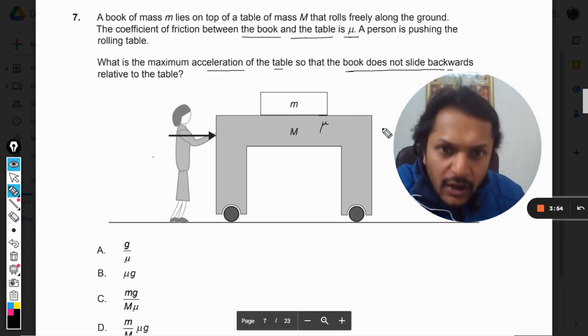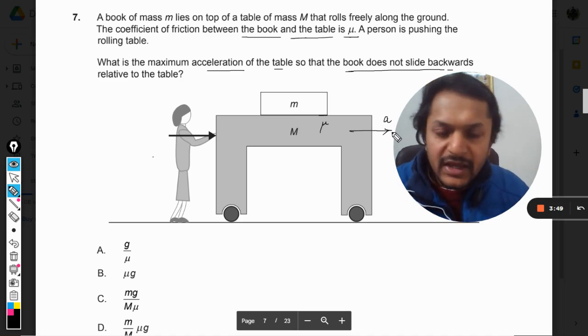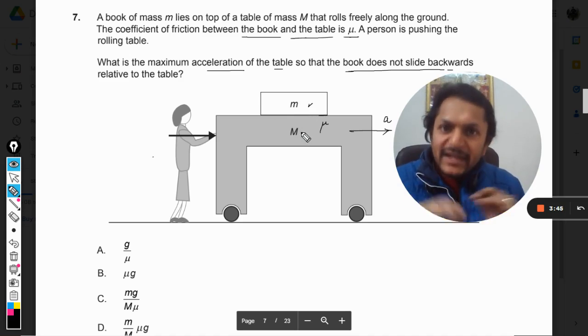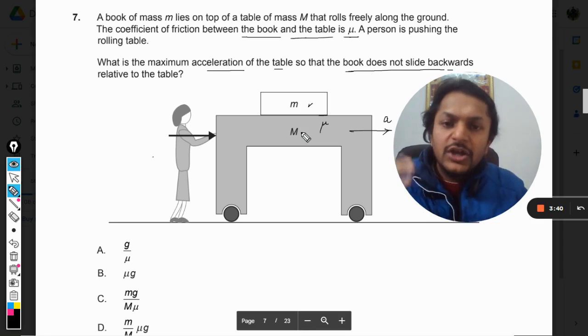The book of mass m is placed on the table and even that book is moving without any relative motion. So obviously, this mass is also moving with acceleration a.